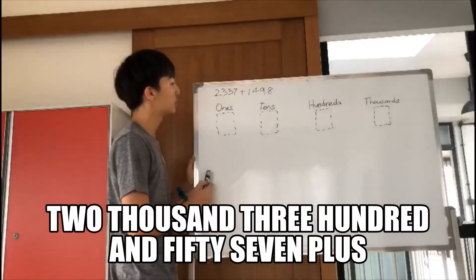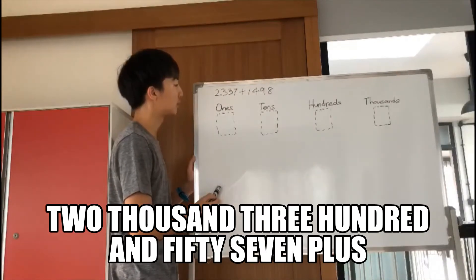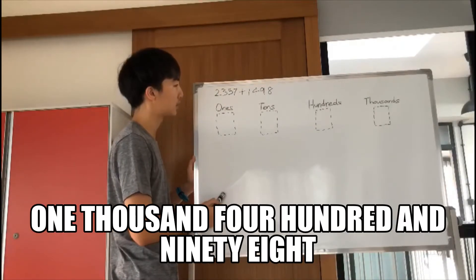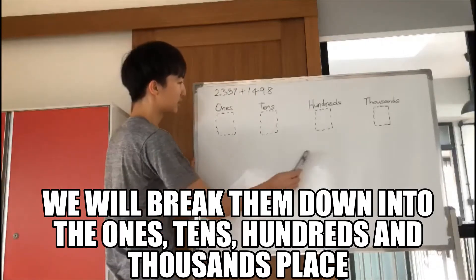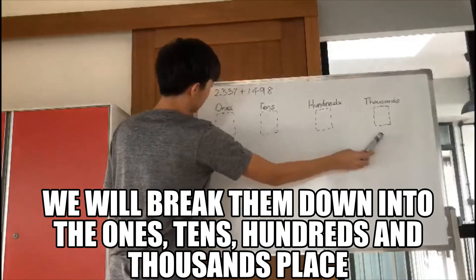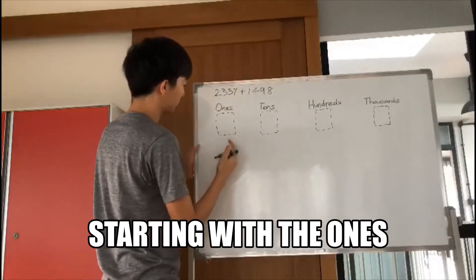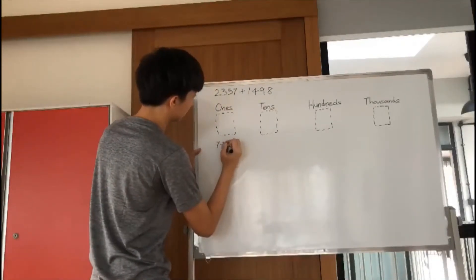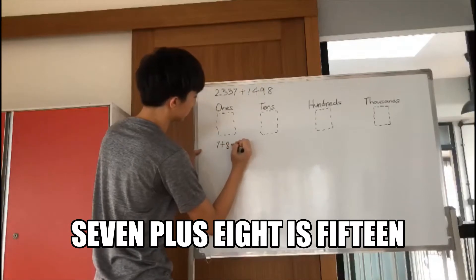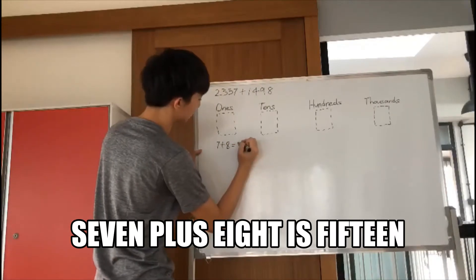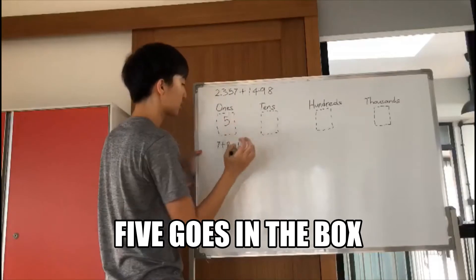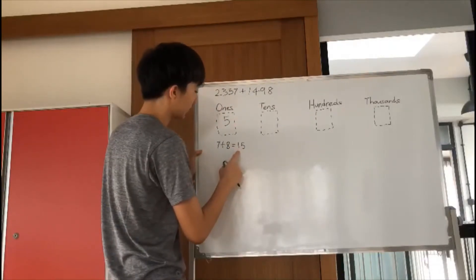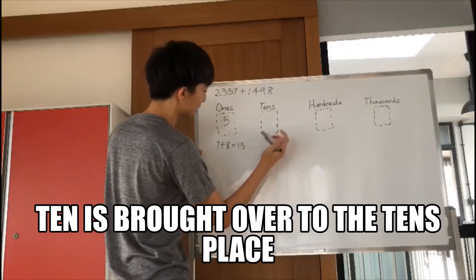Two thousand three hundred and fifty-seven plus one thousand four hundred and ninety-eight. We will break them down into the ones, tens, hundreds, and thousands place. Starting with the ones: seven plus eight is fifteen. Five goes in the box, and ten is brought over to the tens place.